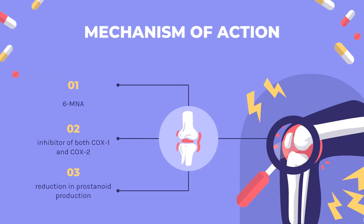Mechanism of Action: Nabumetone's active metabolite, 6-MNA, is an inhibitor of both COX-1 and COX-2, although it exhibits some COX-2 selectivity. Inhibition of COX-1 and COX-2 reduces the conversion of arachidonic acid to prostaglandins (PGs) and thromboxane TXA2. This reduction in prostanoid production is the common mechanism that mediates the effects of nabumetone.